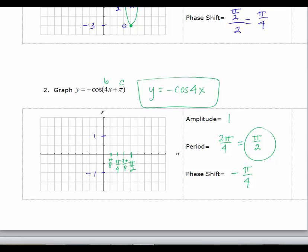Cosine would have a max at the beginning and at the end. But since I am reflected, I'm going to have a min at the beginning and the end of the period. It would have had a min halfway of negative 1 but now it's going to have a max.